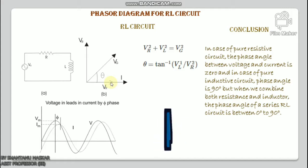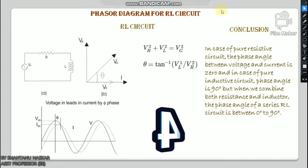Step three: we know that in an inductor, voltage leads current by 90 degrees, so draw VL perpendicular to the current phasor in the leading direction. Step four: now we have two voltages VR and VL. Draw the resultant voltage V such that V² = VR² + VL², and from the right-angle triangle we get the phase angle: θ = tan⁻¹(VL / VR). This is the phasor diagram of the RL series circuit.